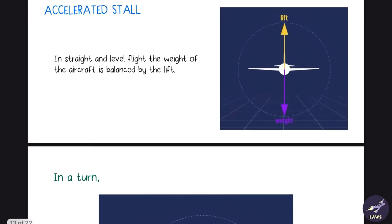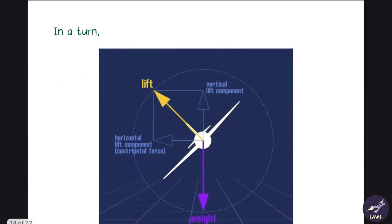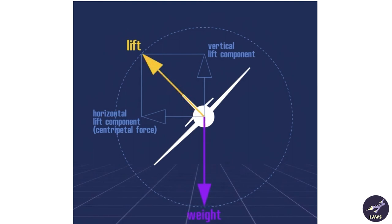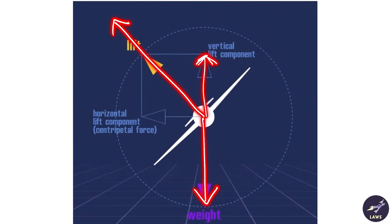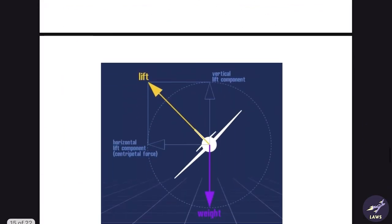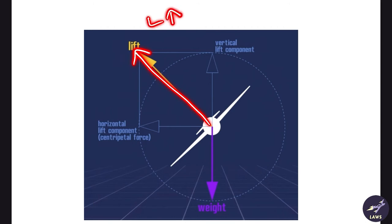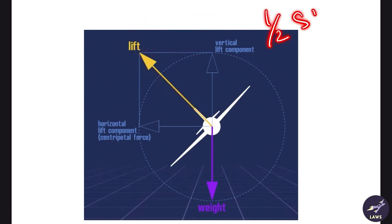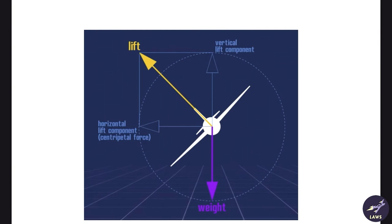Next is accelerated stall. In straight and level flight, lift equals weight. In a turn, lift must balance weight as well as centripetal force. Lift is divided into a horizontal component (centripetal force) and a vertical component that balances the weight. Since the vertical component alone must balance weight, total lift must be increased. As lift increases, stall speed also increases. So in a turn, stall speed is higher than in straight and level flight.